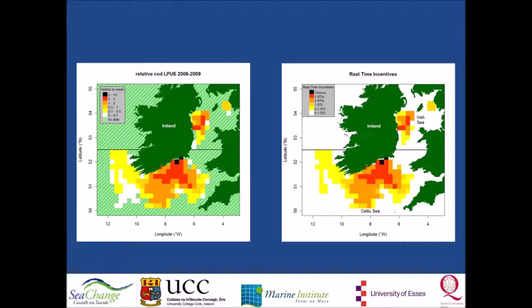Managers set the tariffs according to agreed fishing mortality targets of commercial species, making use of historical and real-time spatial information on catch rates. The tariffs would be set high in areas where the impact on the stock is high, and tariffs would be low where the impact is low.